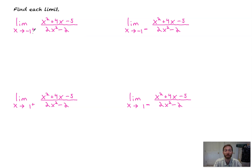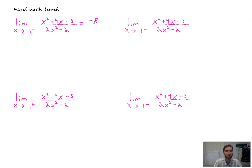The limit is x approaches negative one from the right side of negative one. The first thing I always do with a limit before I break it up or factor it is I plug that number directly in. If we've got a nice constant, finite number, then that's the limit. So negative one gets plugged in: I get one, four times negative one is negative four, so that's negative three minus five is negative eight. All over — negative one squared is one.